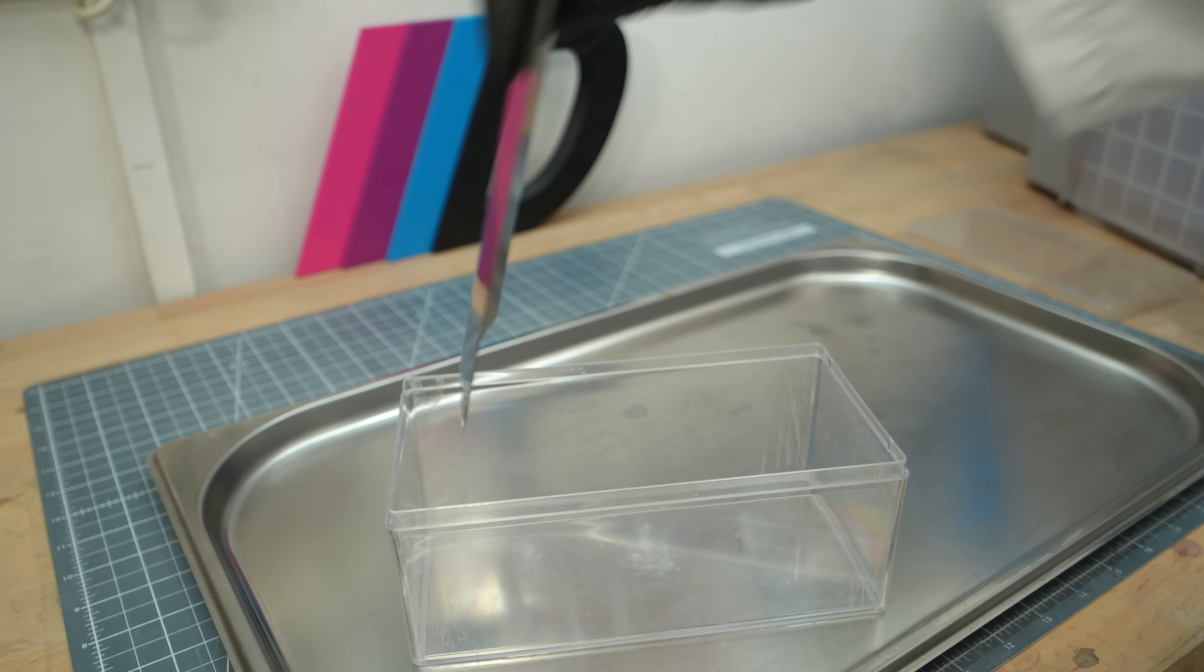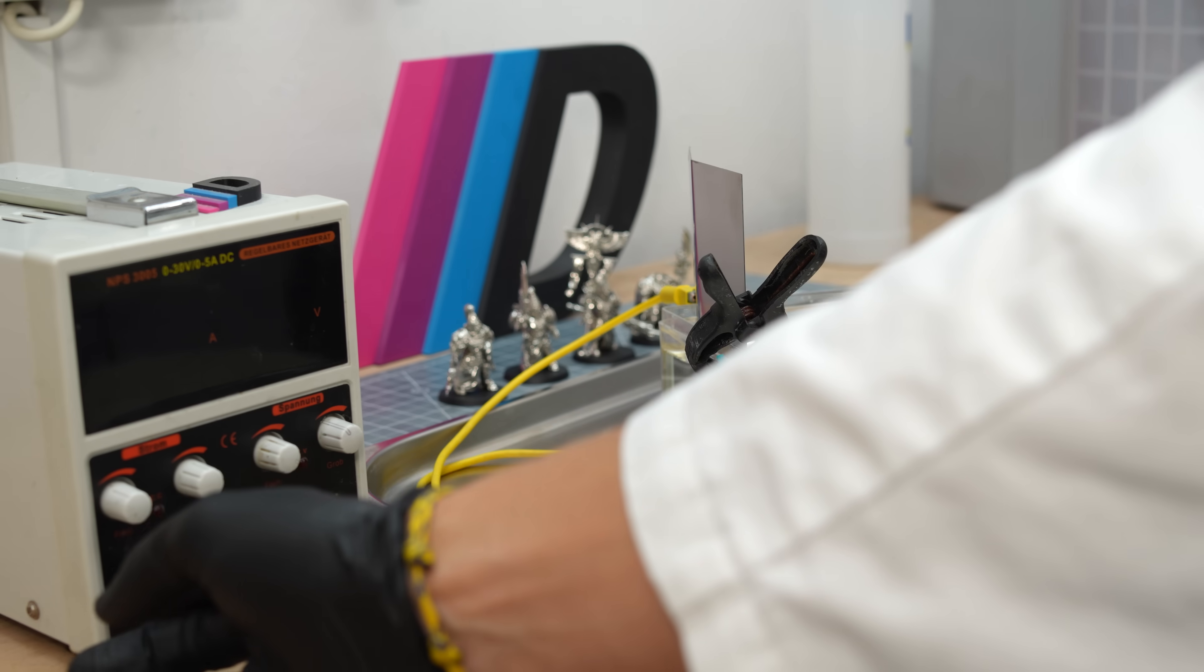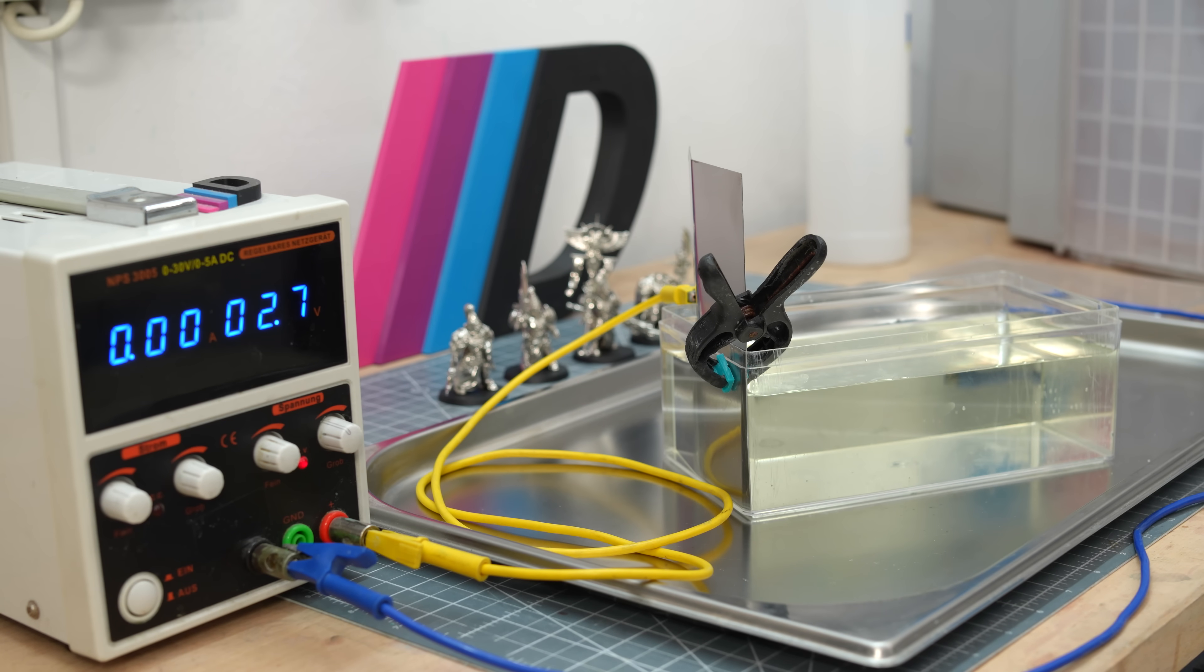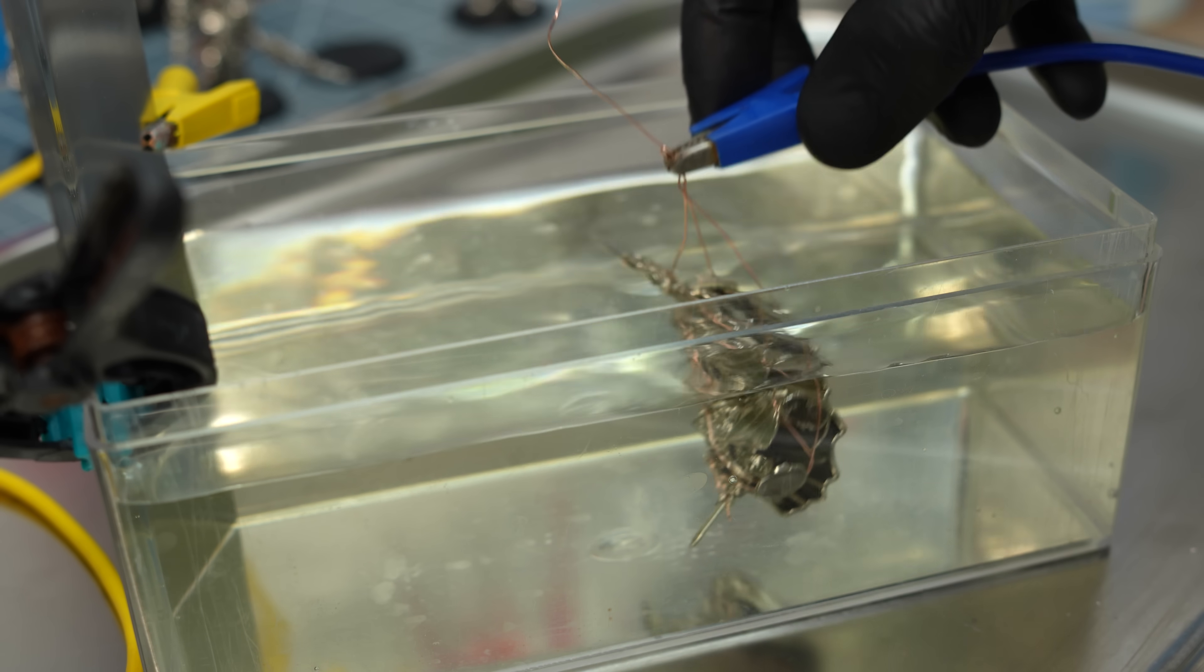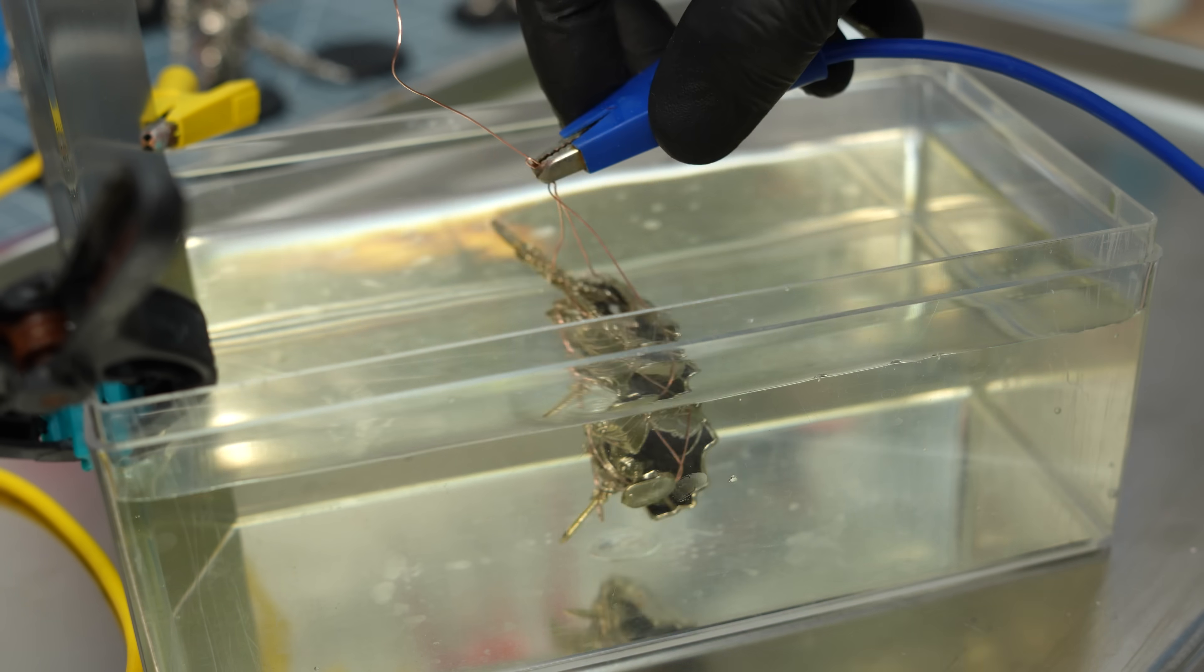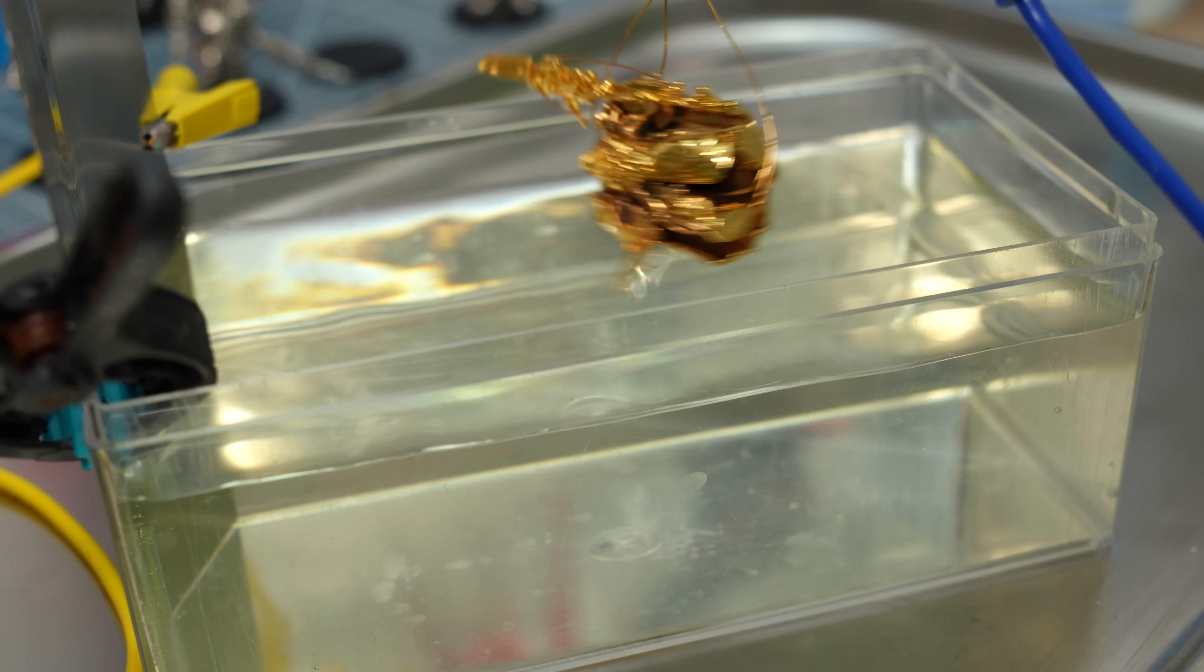Gold is relatively easy. Basically just like before, constant voltage and then follow the instructions at around 3-4 volts for gilding. It only takes a few seconds. Rinse and voila!